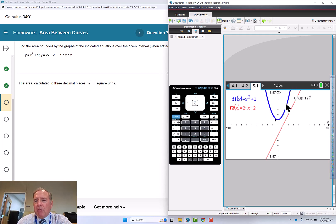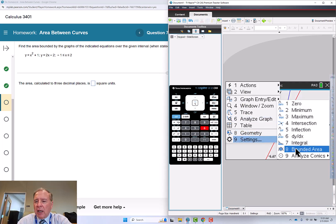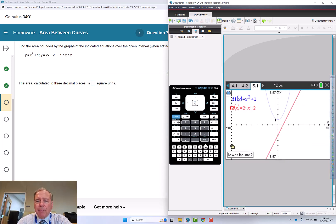It's going to be upper function, lower function over the entire range. Easiest way to do this is to use bounded area. Menu 6, 8 for bounded area, negative 1, enter 2, enter, and our area is nine square units.